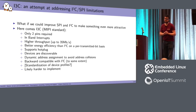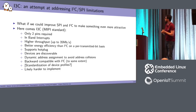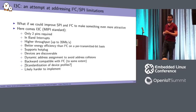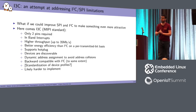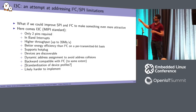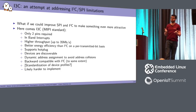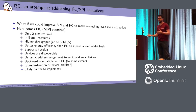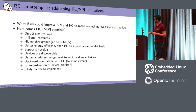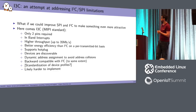It supports dynamic address assignment, meaning devices no longer have their addresses assigned statically. One important thing is backward compatibility with I2C — on an I3C bus, you can connect your old I2C devices, or most of them. They also plan to standardize device profiles, similar to USB classes, so you'd have a common interface to control a device type without implementing a driver for each new vendor device. The downside is that I3C will likely be harder to implement in hardware than I2C or SPI.